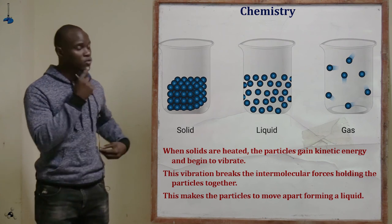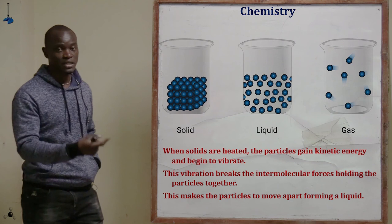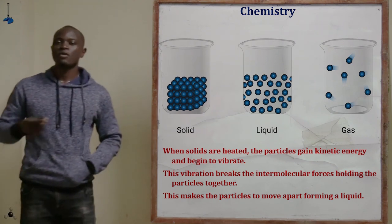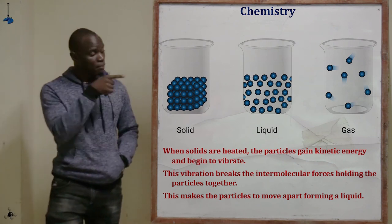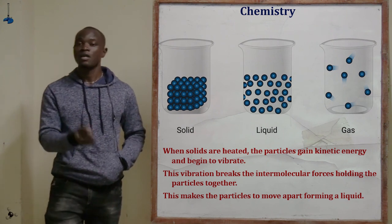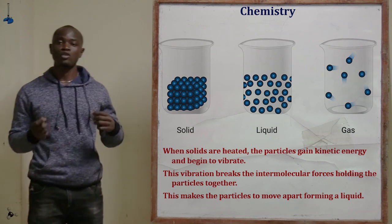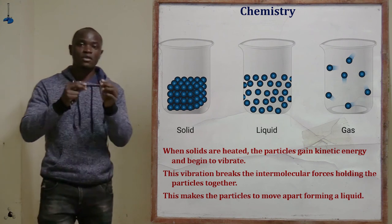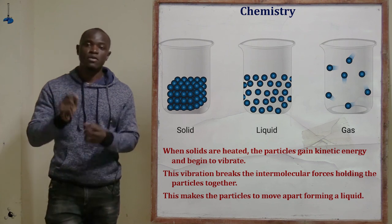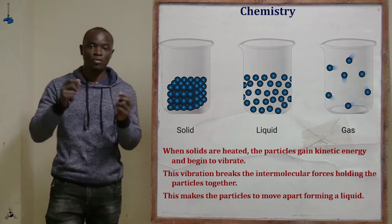When solids are heated: first, the particles absorb heat. After absorbing heat, the intermolecular forces between the particles become weak. Because the intermolecular forces — the forces holding the particles together — become weak, the particles begin to vibrate and then move apart. This is how solids transition through states when heated.